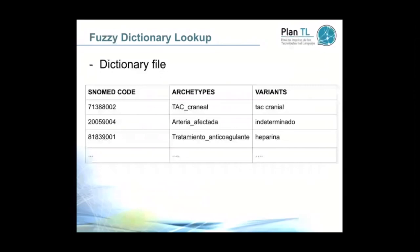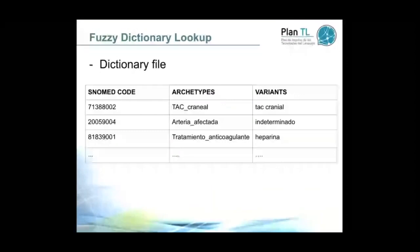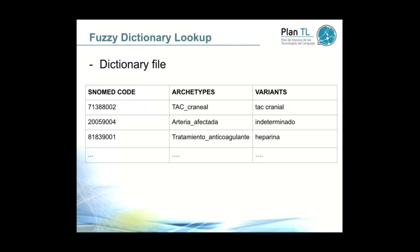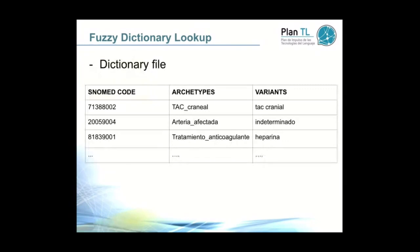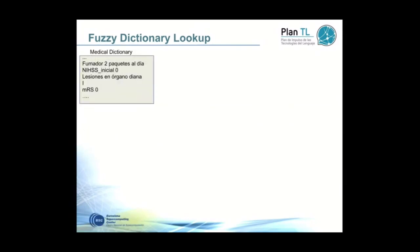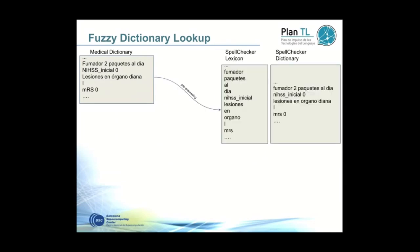The fuzzy dictionary lookup works similarly to the original fast dictionary lookup in CTEX. We need input dictionary files that include all the words we want to detect. In this file, we have three columns: the first column has the SNOMED code, the archetype, and the variants. One archetype can have several variants. Here in the medical dictionary, we have all the sentences, short phrases, or words that we want to detect.